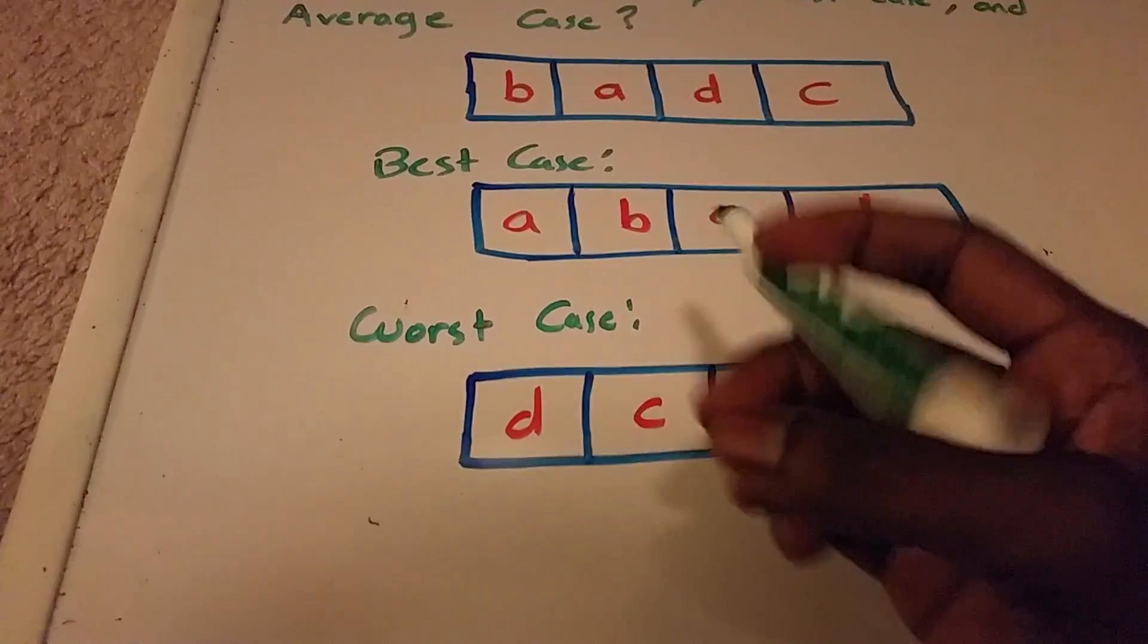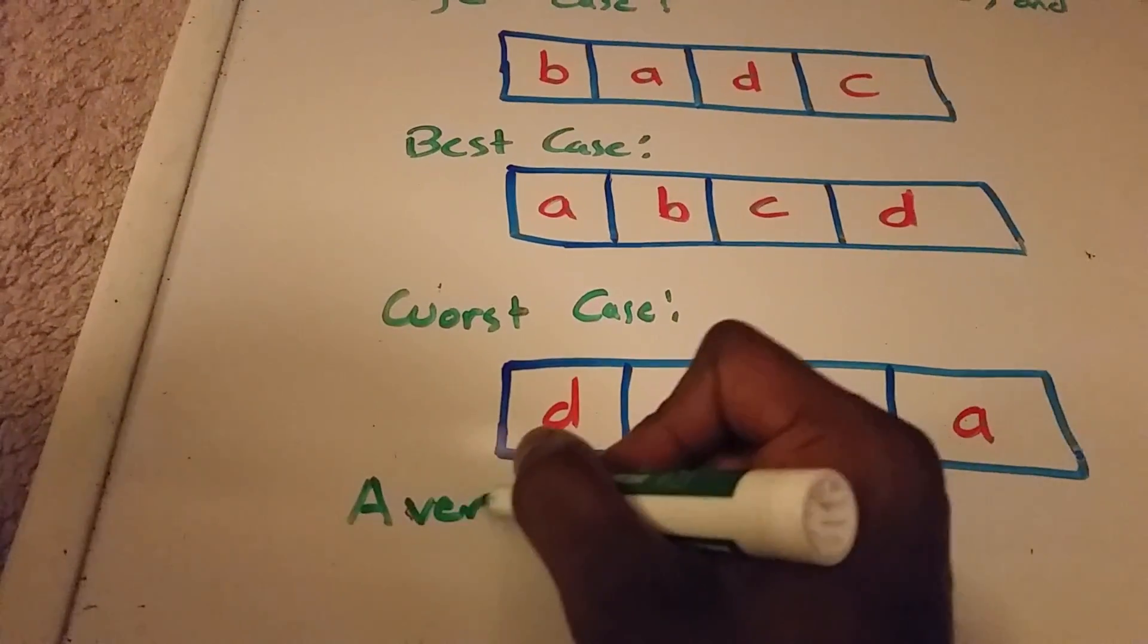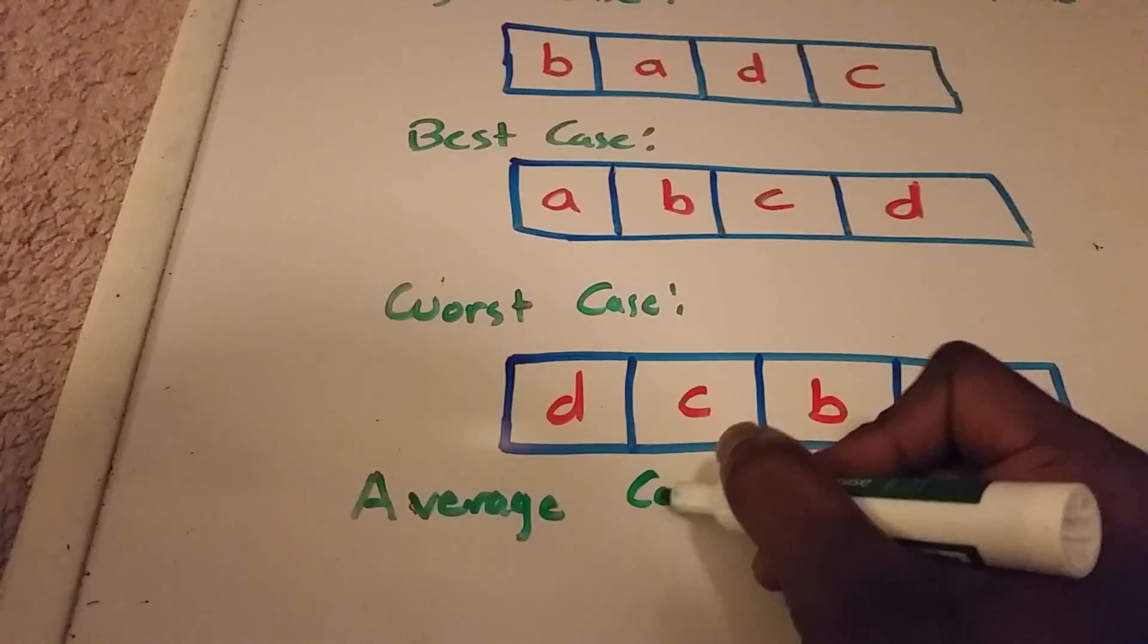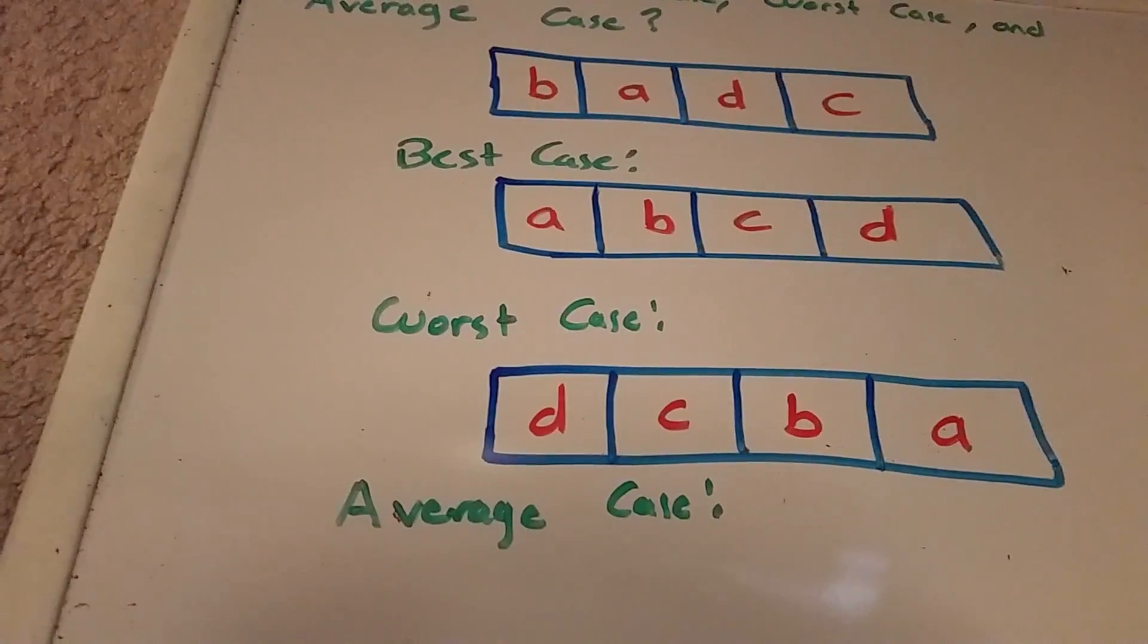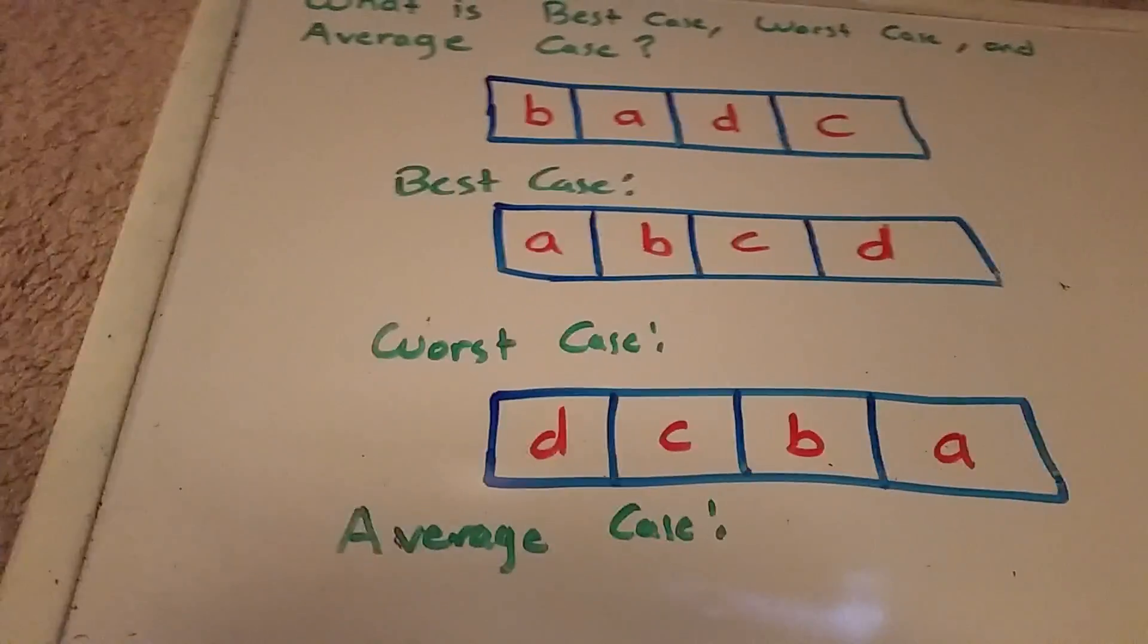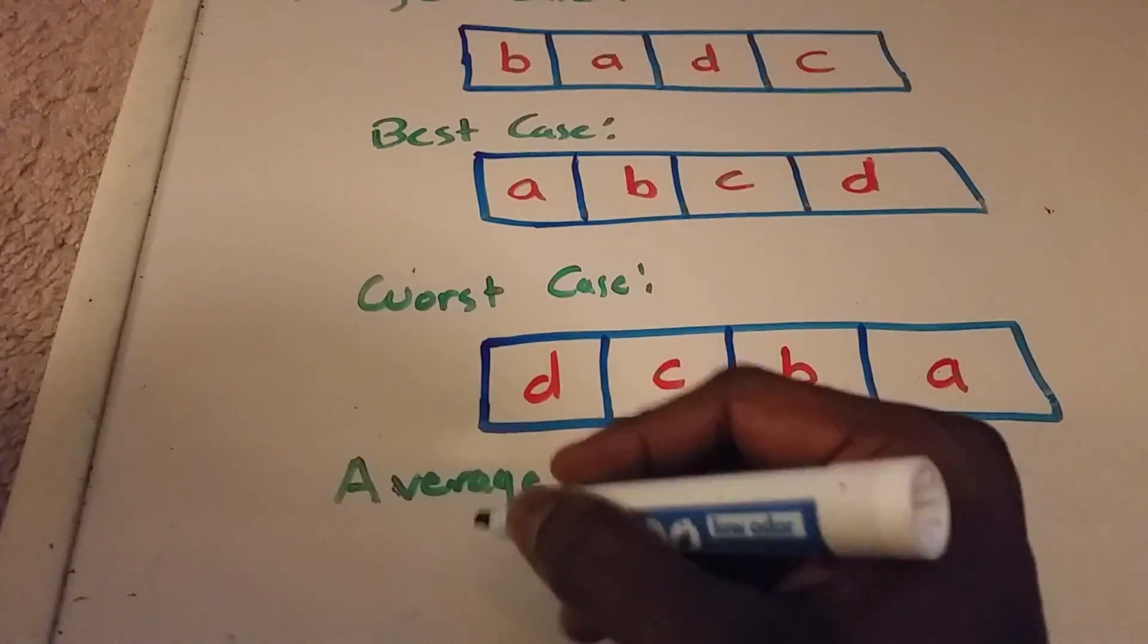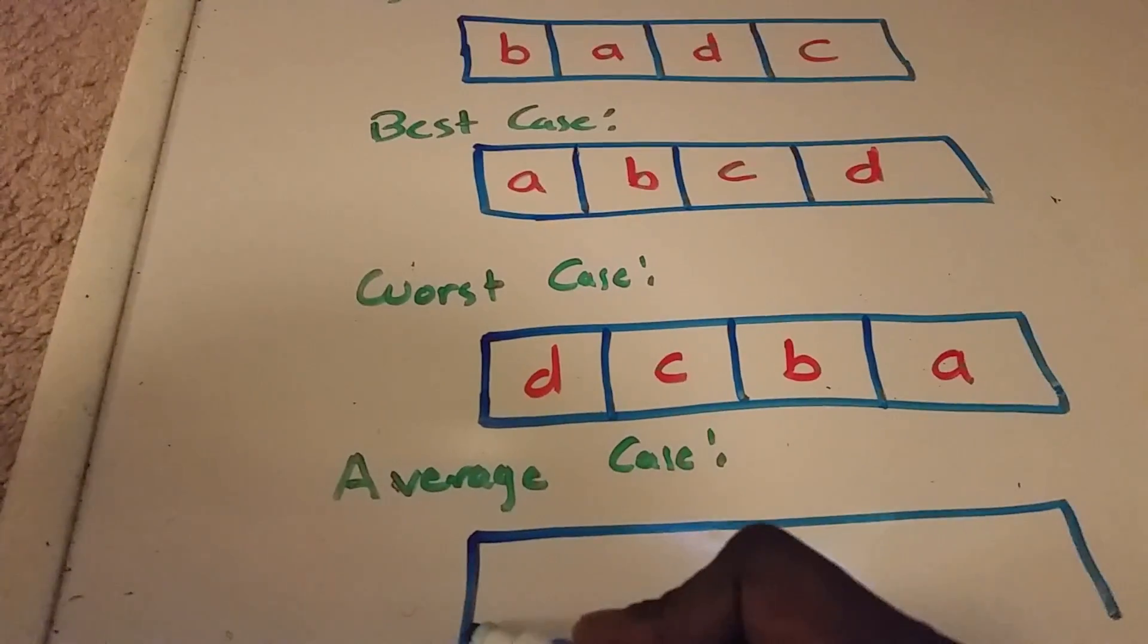And then last but not least, we have the so called average case. You can guess if it's not best case, it's not worst case, then anything in between would be the average case.